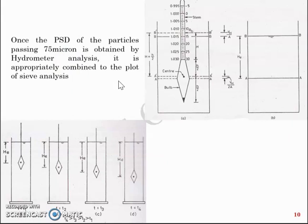Once the particle size distribution of the particles passing 75 micron is obtained by the hydrometer analysis, it is appropriately combined to the plot of the sieve analysis. For example, if you have used three kilograms of soil for sieve analysis and you have 60 grams of soil passing 75 micron, you use 50 grams which is standard for hydrometer analysis.